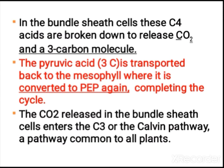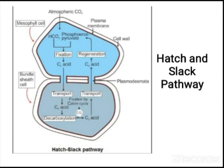The C4 acids formed in mesophyll cells are transported to bundle sheath cells, where they break down to release carbon dioxide and a three-carbon molecule. That three-carbon molecule can then enter the Calvin pathway. In the cycle, atmospheric carbon dioxide is fixed by phosphoenol pyruvate — a three-carbon compound — and combined with one carbon to form a four-carbon compound, oxaloacetic acid.